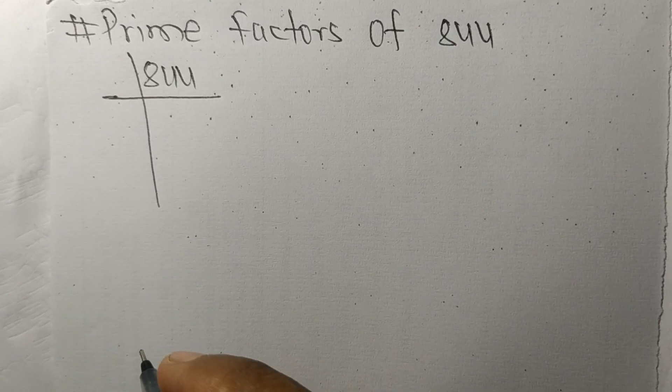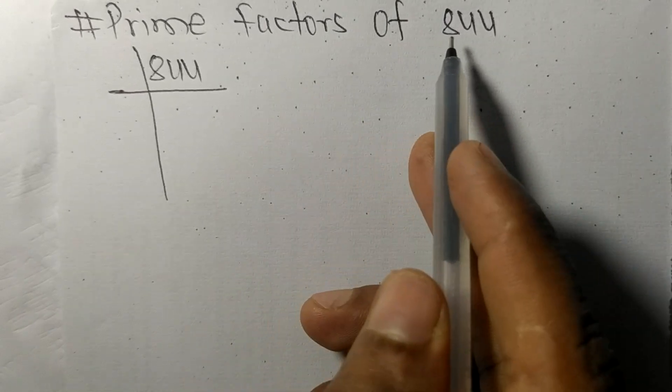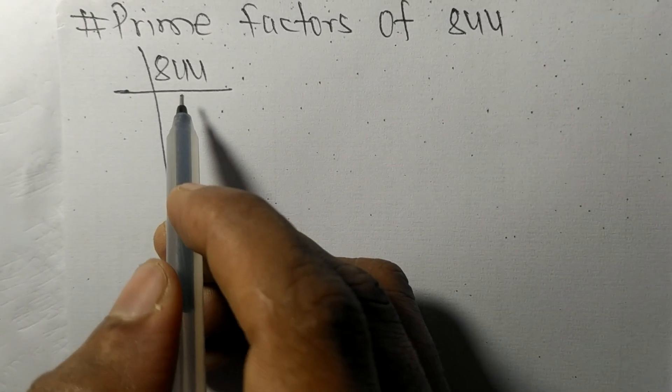So today in this video we shall learn to find the prime factors of 844. So at last it contains an even number 4, so this whole number is divisible by 2.